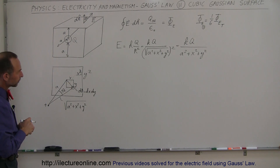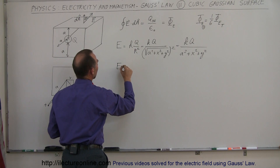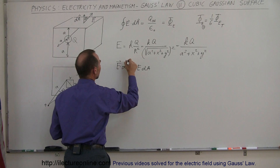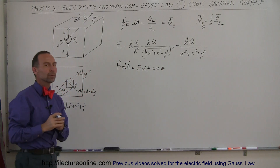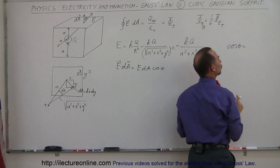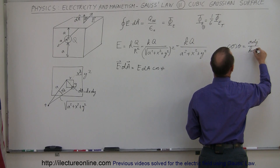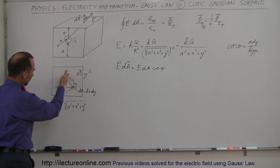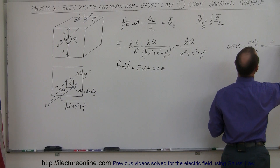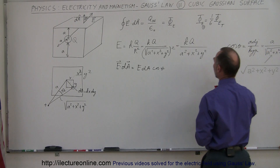We want to calculate E dot dA. We have E dot dA equals E times dA times the cosine of the angle between them. To find the cosine of theta, recall that cosine equals the adjacent side divided by the hypotenuse. The adjacent side is A, and the hypotenuse is the full diagonal distance. So cosine of theta equals A divided by the square root of A squared plus x squared plus y squared.